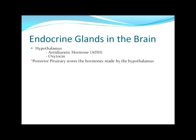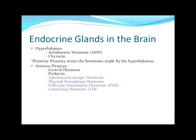The hypothalamus produces these two hormones but does not store them — that work is done by the posterior pituitary. So the posterior pituitary does not make any hormones of its own; it just stores those made by the hypothalamus. Next is the anterior pituitary, which can be considered our master gland. It produces six hormones: two that directly affect target cells, and the remaining four are tropic hormones.